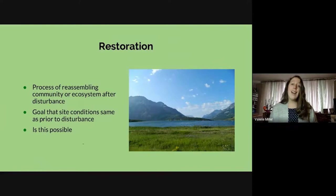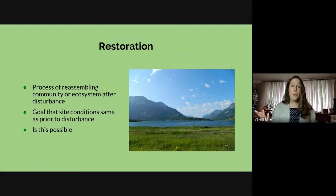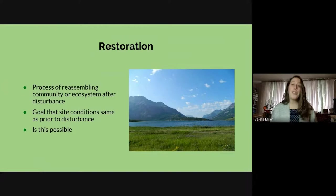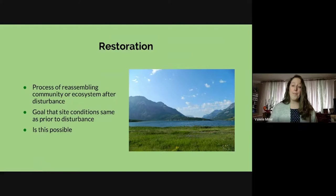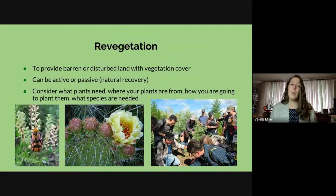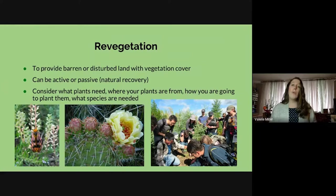Now we're going to talk about a few words we use when we think of reclamation. The first is restoration — the process of reassembling a community or ecosystem after a disturbance with the goal of returning the site to what it was prior to the disturbance. Restoration is more commonly used when the intent is to restore through actions like planting certain species or creating the landscape in a certain way, which sets the stage for longer-term restoration. The next word is revegetation: providing vegetation or plants on a barren or disturbed landscape. It can be done actively by planting, or passively by letting plants come in on their own.